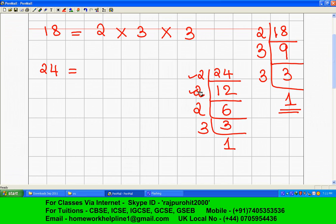So 24 is equal to, just put all these numbers: 2, 2, 2, and 3. So 2 into 2 into 2 into 3.